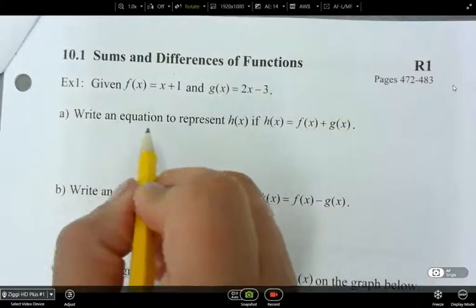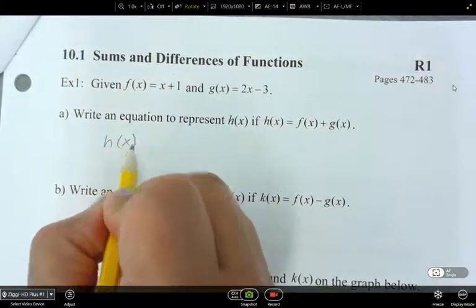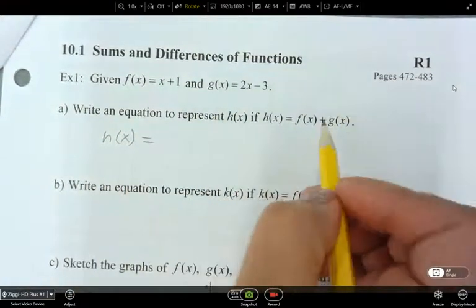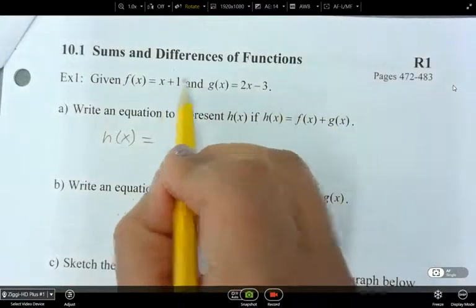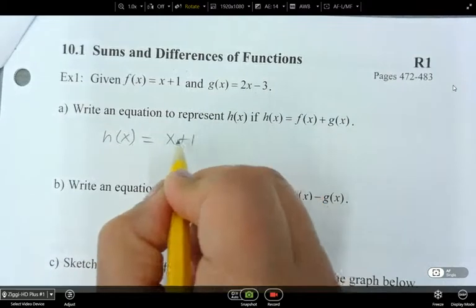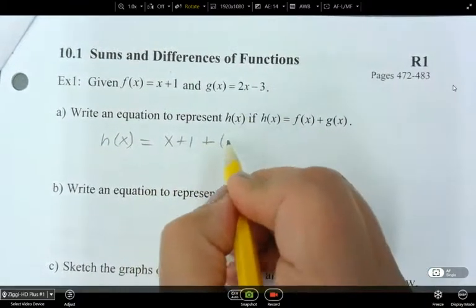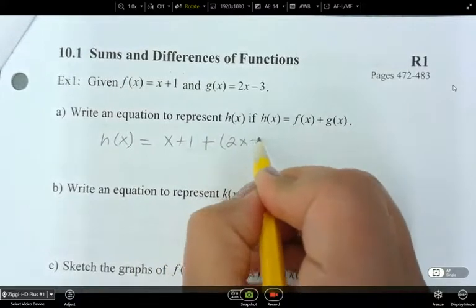Differences mean to subtract them. So here we've got h of x. We want to express h of x as f of x plus g of x. So all we do is take h of x. Now since we know it's equal to f and g, we can have x plus 1, which is our f of x, plus our g of x, which is 2x minus 3.